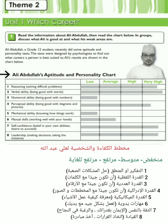Ali Abdullah's aptitude and personality chart. Categories range from low, average, high, to very high. Category 1: Reasoning — solving difficult problems. Category 2: Verbal ability — being good with words.